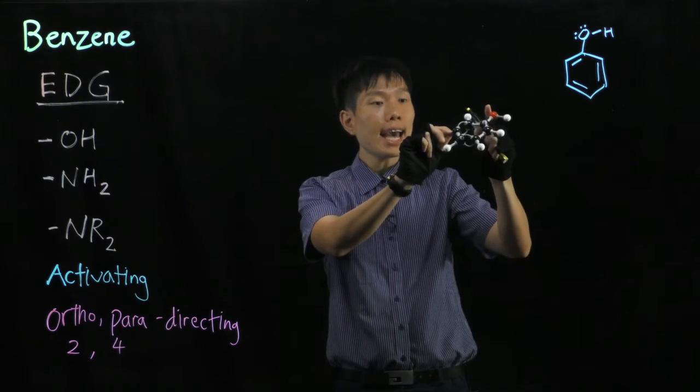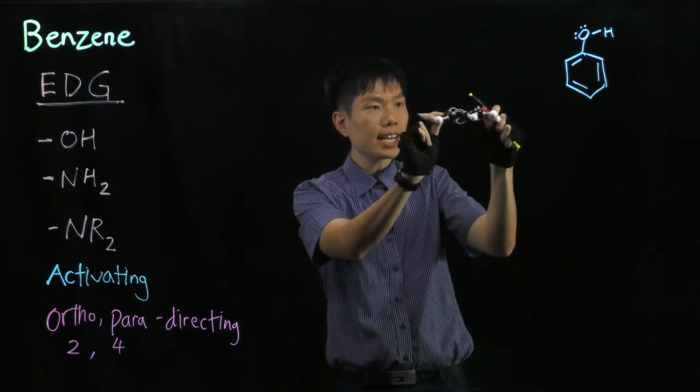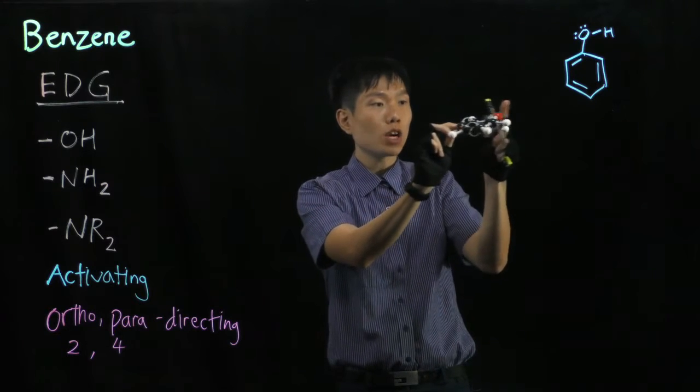oxygen atom and the pi orbitals inside the benzene ring. They are just nice at the right structure.